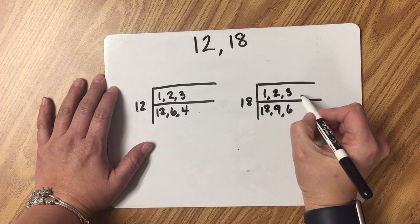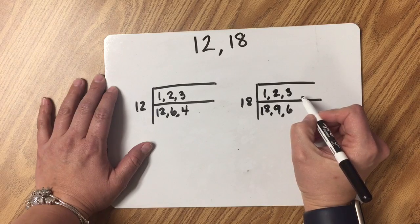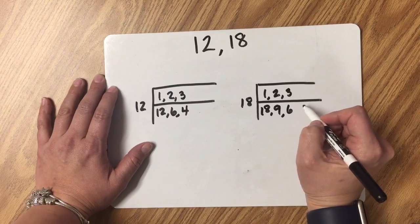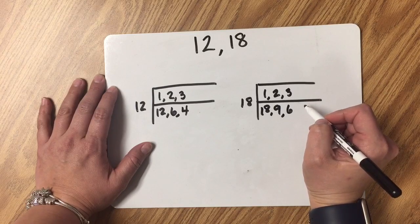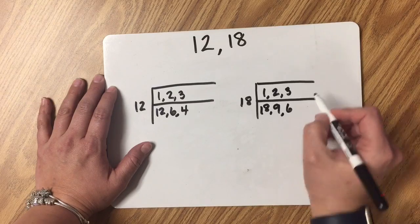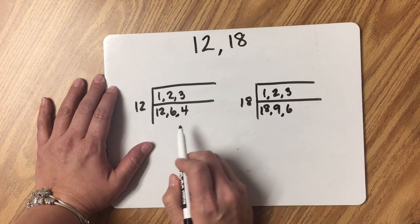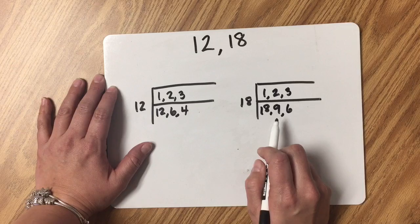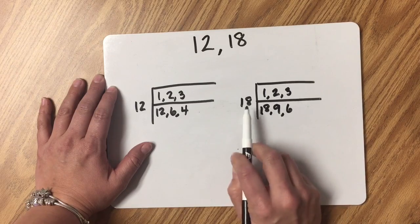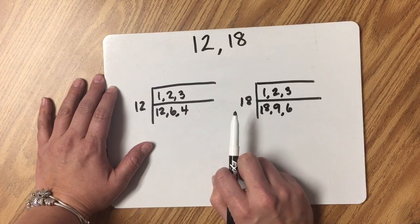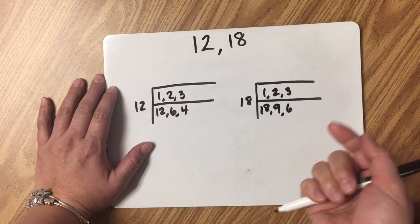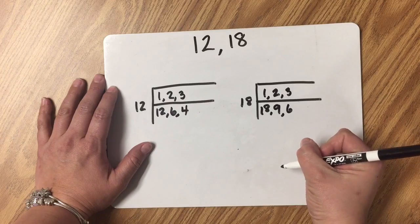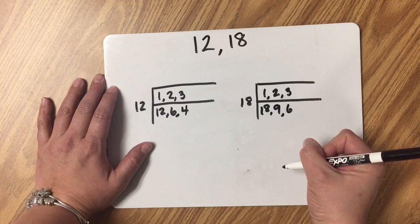Then I'm going to go to 4. Well 4 doesn't multiply by another number to equal 18. So I'm not going to write that down. So I'm going to move to 5. Well 5 times another number doesn't equal 18 either. So I'm going to move to 6. Well 6 is written right here. So just like I did with 12, I know that I've probably written all of my factors, but I'm going to double check and ask myself and go through all of the numbers until I get up to 18 just to double check. So I would ask myself about 7, 8, 9, 10, 11, 12, 13, 14, 15, 16, 17, and 18.